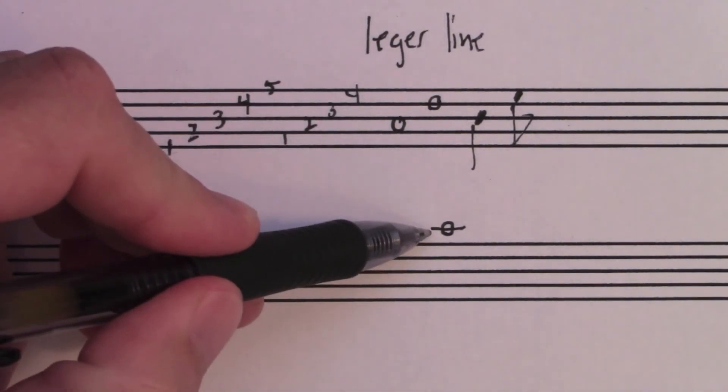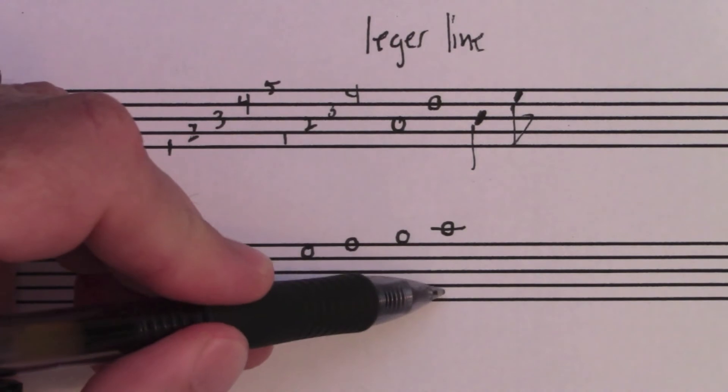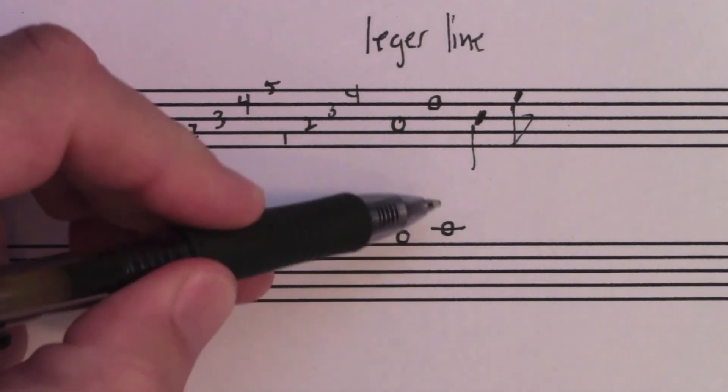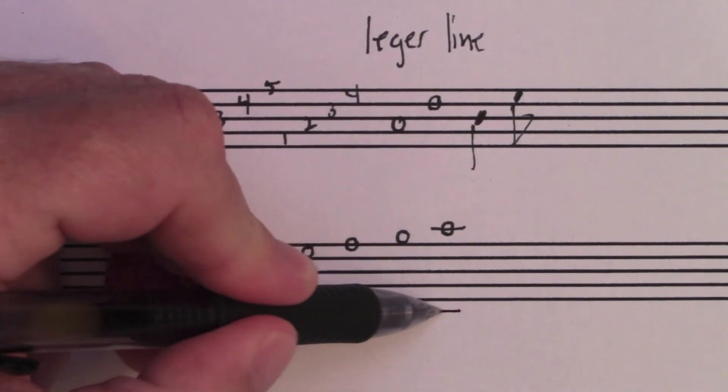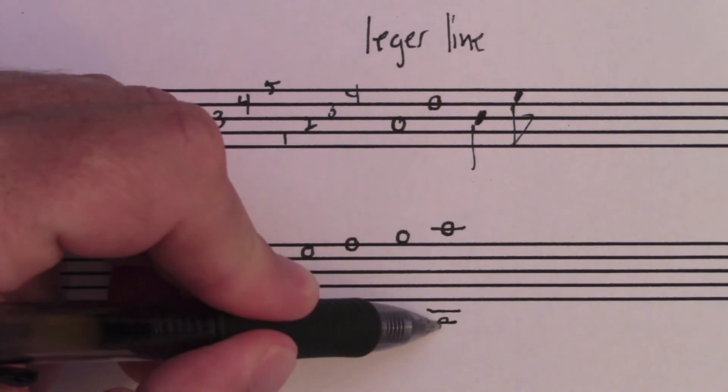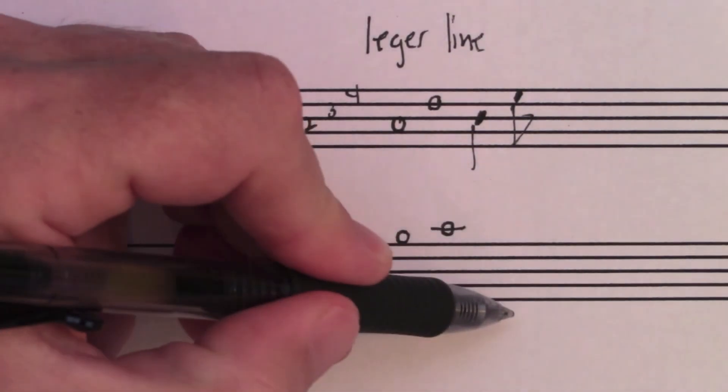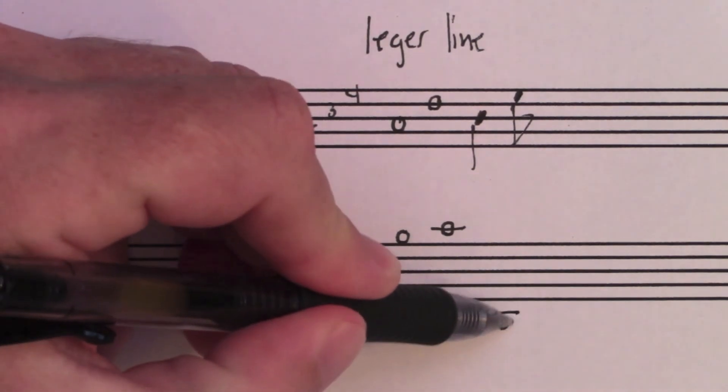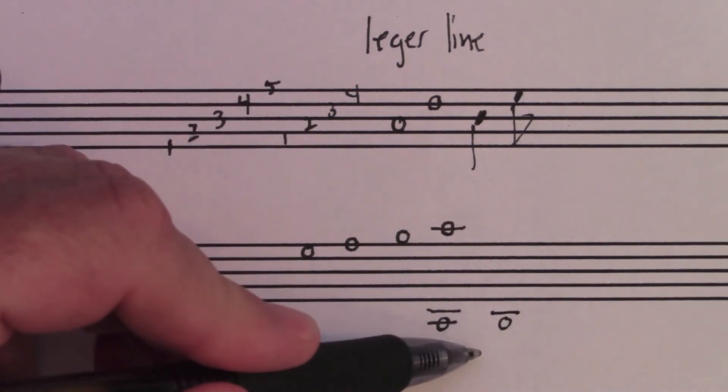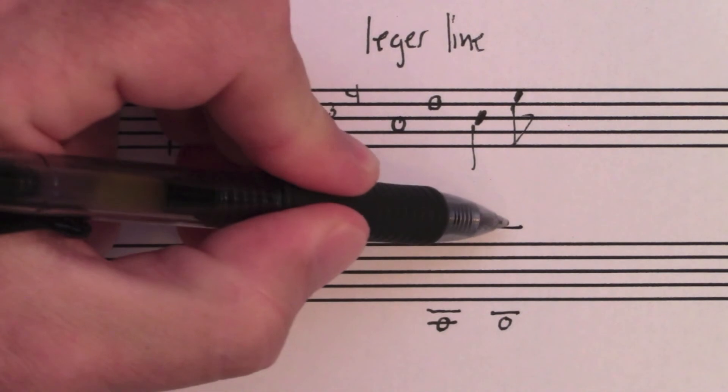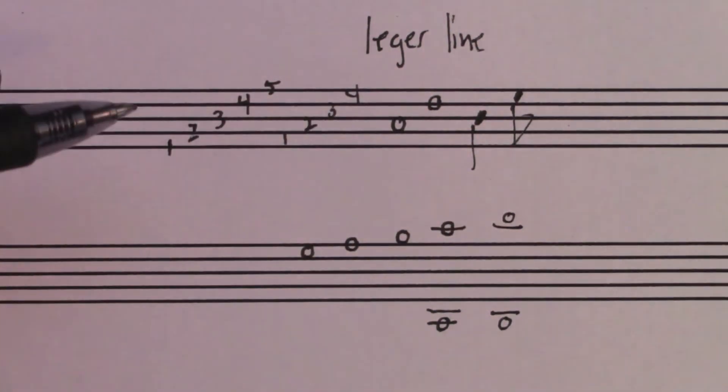So you can have a ledger line which extends the staff above or below the regular five lines and four spaces. You can have a space note beneath a ledger line, or you can have a space note above a ledger line.